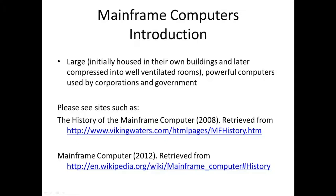Subsequent models, including machines made by companies such as IBM (International Business Machines), Remington, Burroughs, Digital Equipment Corporation (DEC), Cray, and others, increased in speed and computing power by increasing the speed of the CPU and then incorporating multiple processors that worked in parallel. Please see sites such as the History of Mainframe Computer (2008) and Mainframe Computer (2012) retrieved from Wikipedia — URLs are given in the presentation included in the Blackboard portion of this course.